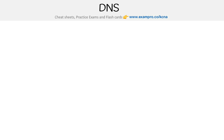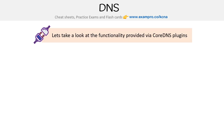So let's look at the functionality provided by CoreDNS, because there are entry plugins, internal plugins, and out-of-tree plugins — things you can add on. This will give us an idea of the things CoreDNS can do other than just resolving a domain name to an IP address.